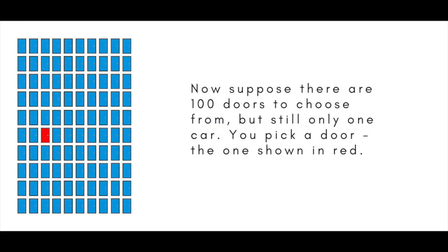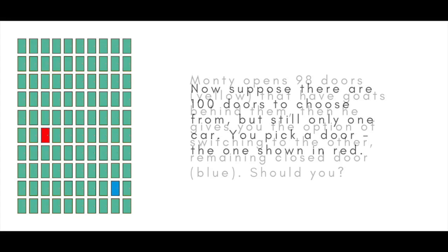This can be hard to grasp. To make it easier to understand, suppose there are 100 doors to choose from, but still only one car. You pick a door. Monty opens 98 that have goats behind them, then gives you the option of switching to the other remaining closed door.